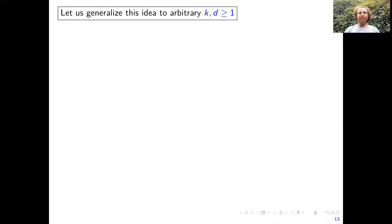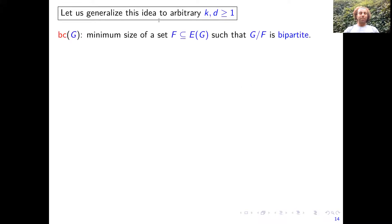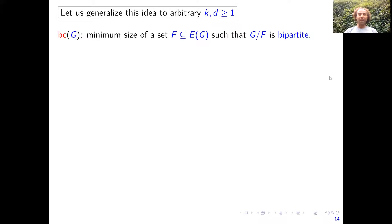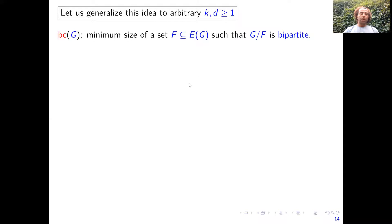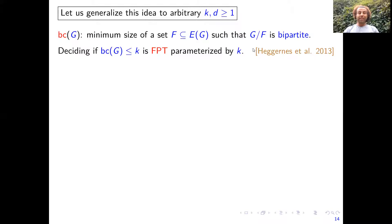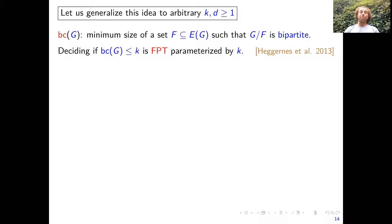Now let's see how we generalize this idea to arbitrary values of k and d. We use the notion of bipartite contraction number BC of G: the minimum number of edges whose contraction results in a bipartite graph. In particular, BC of G is zero if and only if G is already bipartite. We use a result of Hegernes et al. that computing and deciding whether the bipartite contraction number of a graph is at most k is FPT parameterized by k — we use this as a black box.